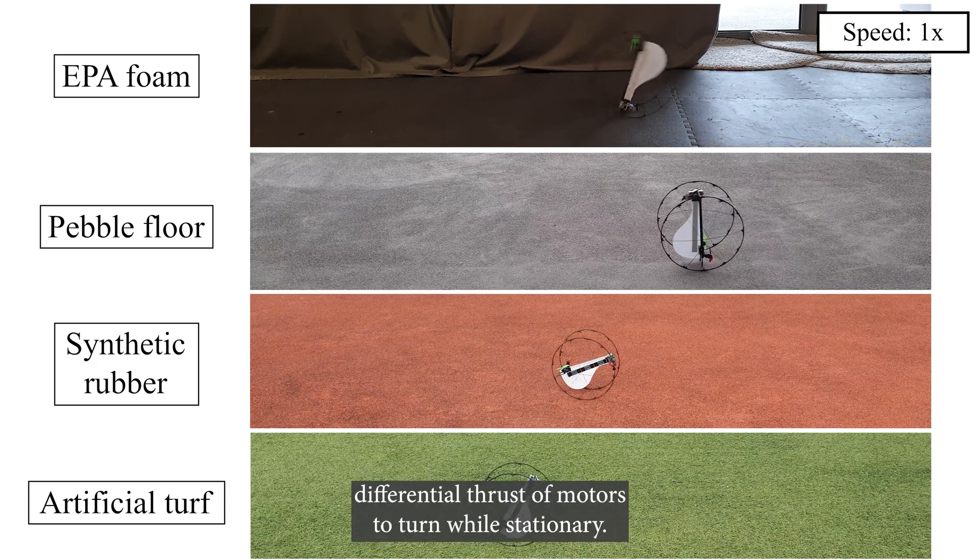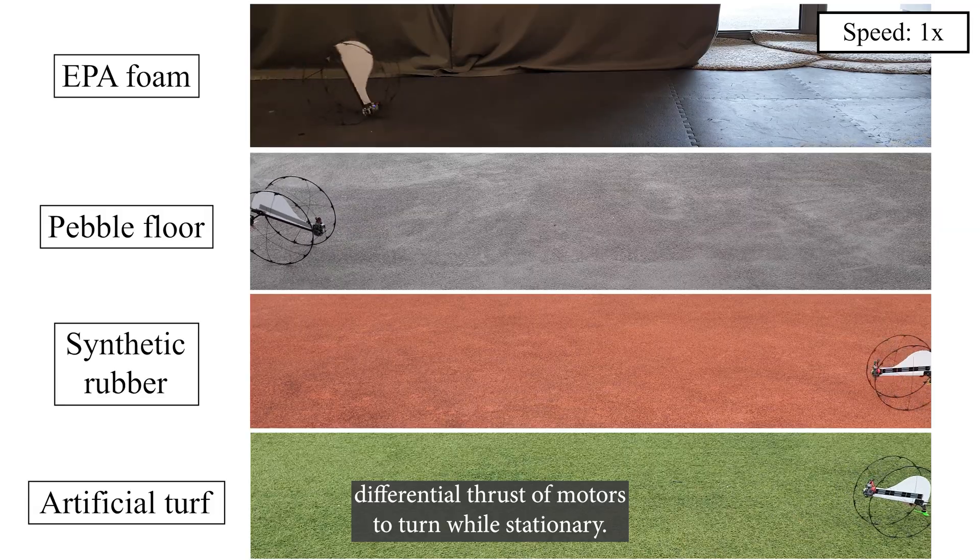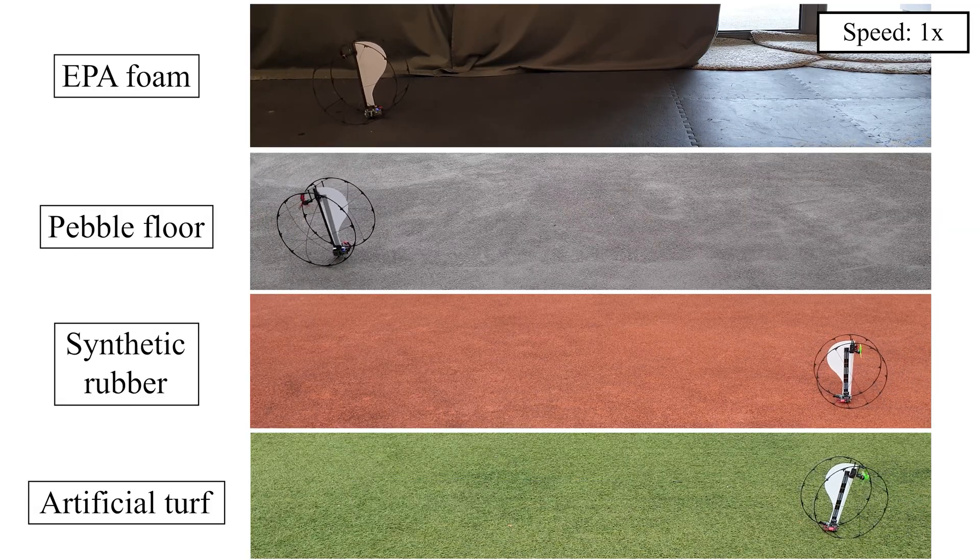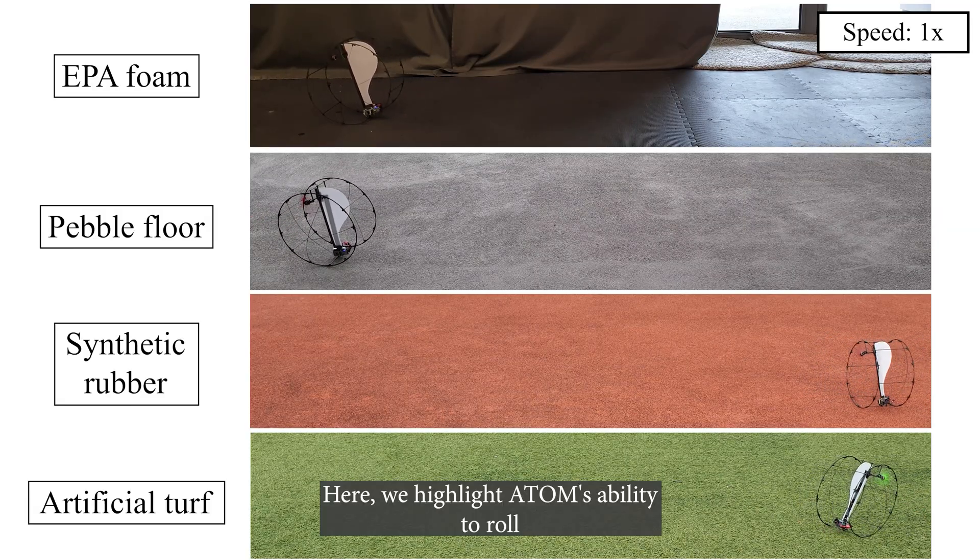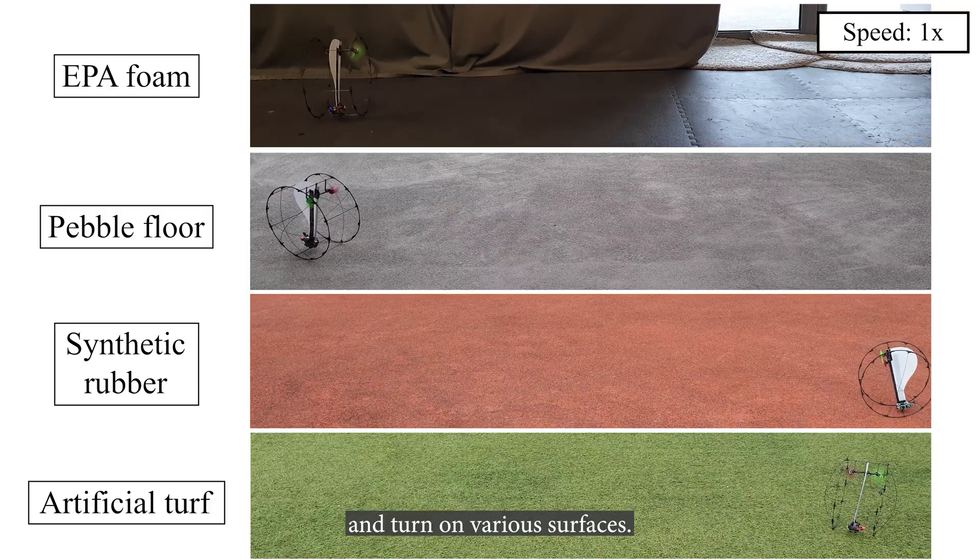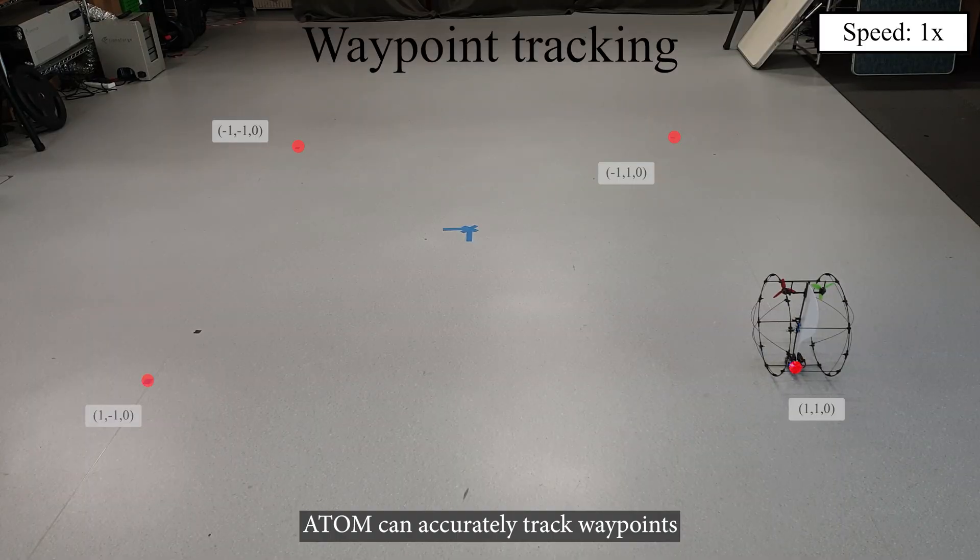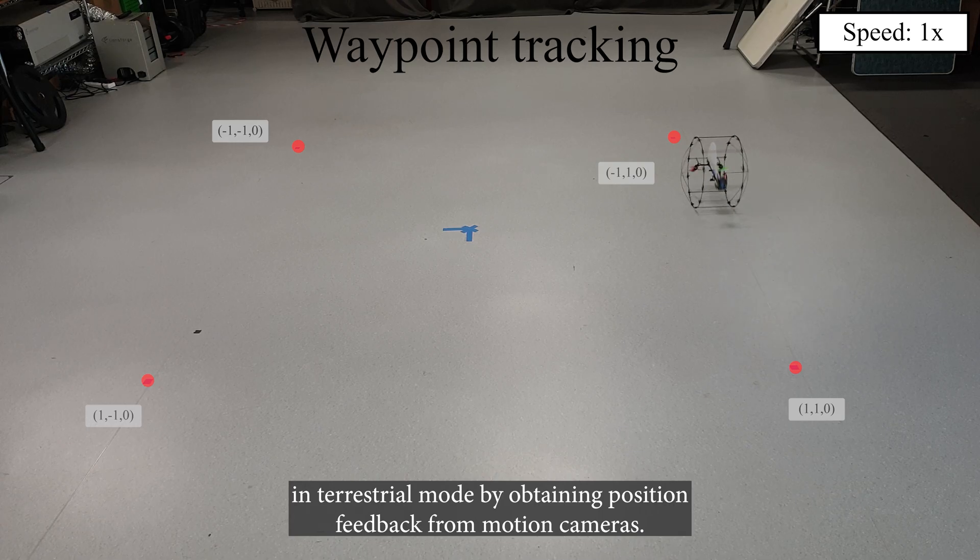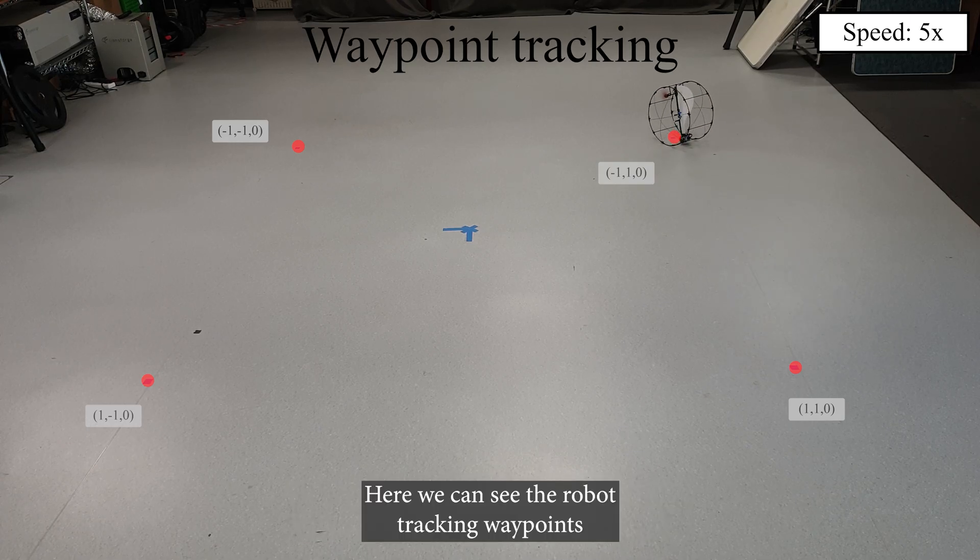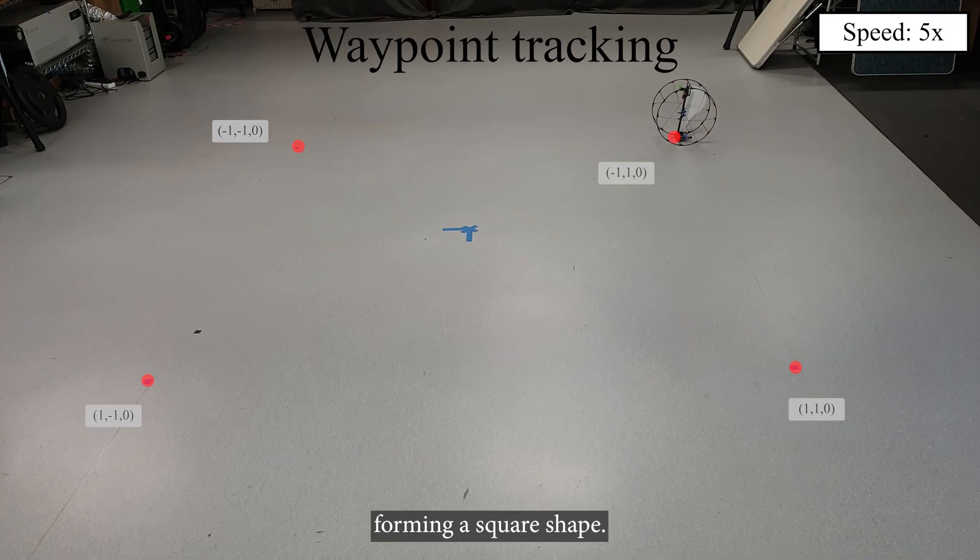Adam utilizes differential thrust of motors to turn while stationary. Here we highlight Adam's ability to roll and turn on various surfaces. Adam can accurately track waypoints in terrestrial mode by obtaining position feedback from motion cameras. Here, we can see the robot tracking waypoints forming a square shape.